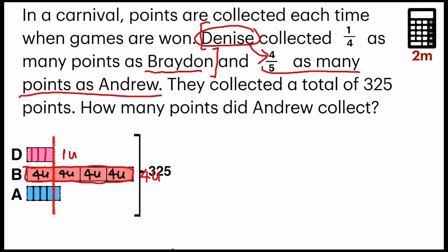So if we were to cut it up, let's find out the total number of units. Denise had four. Brayden has four times four, which is 16. Andrew has five. So the total number of units is 25.